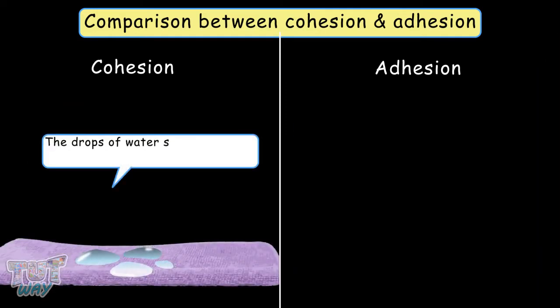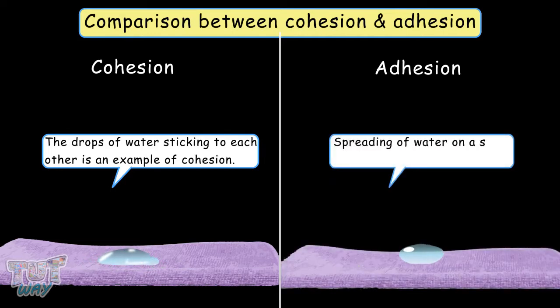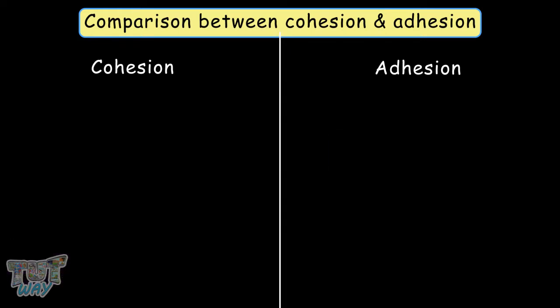The drops of water sticking to each other is an example of cohesion. Spreading water on a solid surface is due to adhesion. Or liquid wets the cloth due to adhesion.